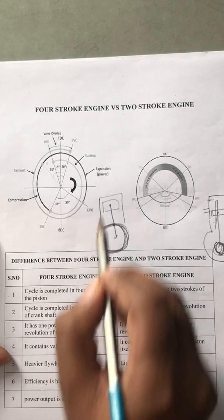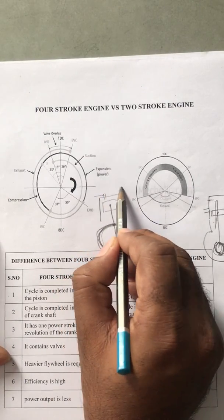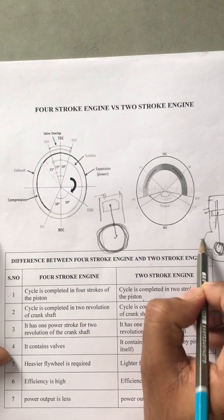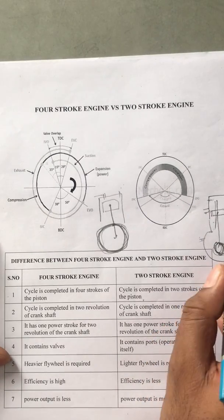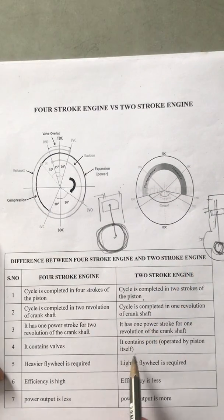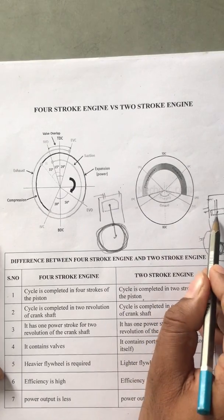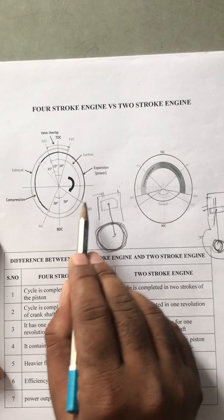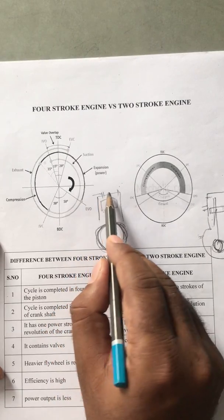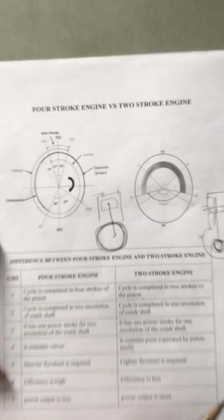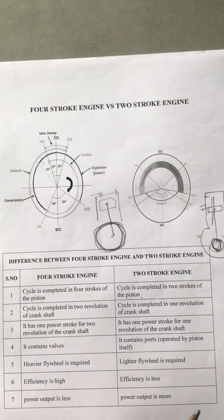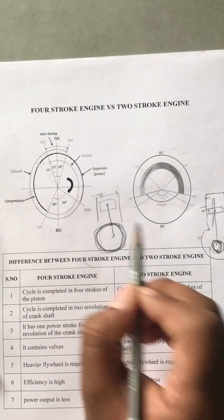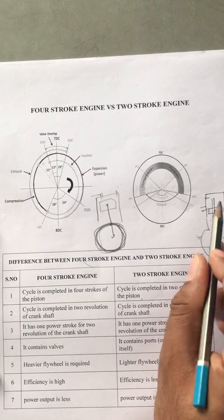The 4-stroke engine contains valves — this is the inlet valve and this is the exhaust valve. The 2-stroke engine uses ports: exhaust port, transfer port, and inlet port. The ports are operated by the piston itself as it moves up and down — there is no separate mechanism. In the 4-stroke engine, a separate camshaft is needed to operate the valves, whereas in the 2-stroke engine there is no camshaft since the ports are operated by piston movement.